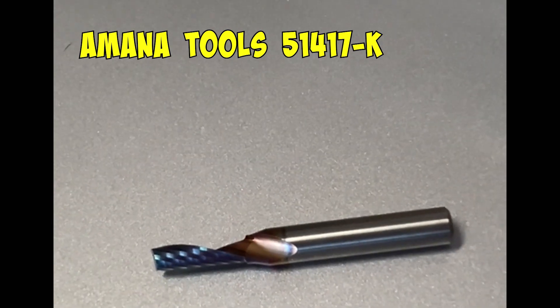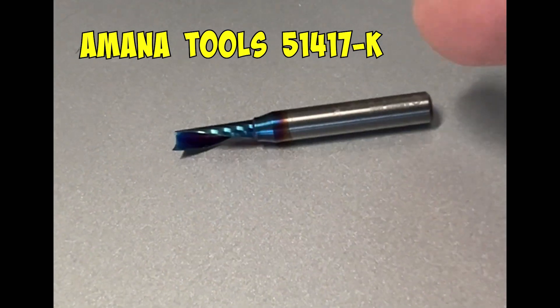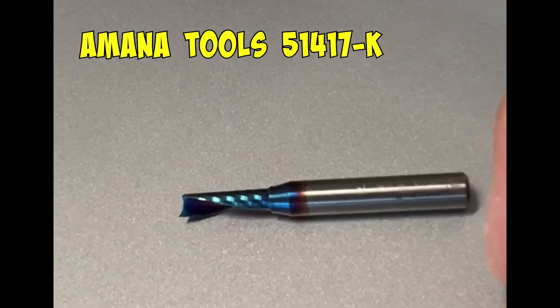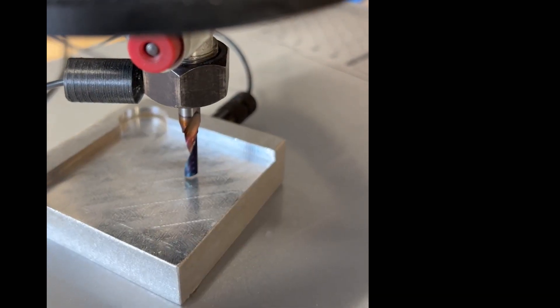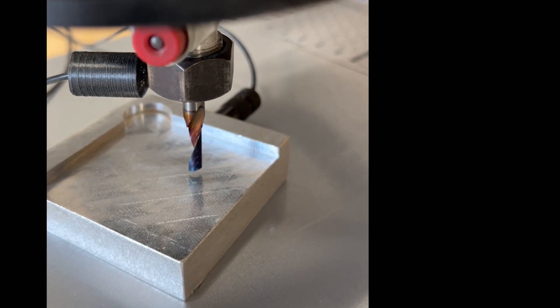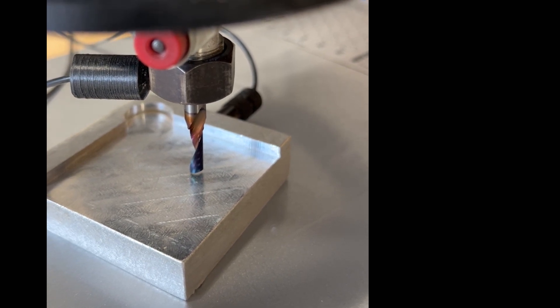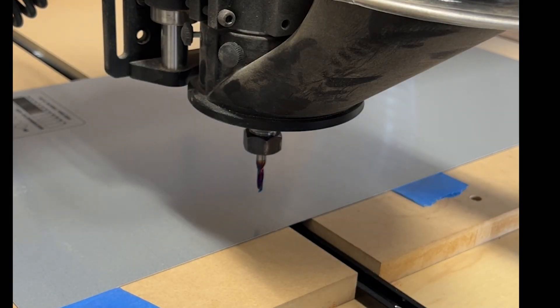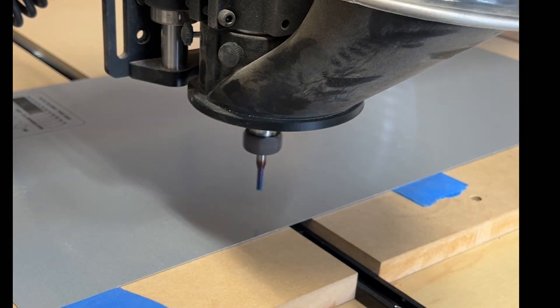Moving on to the cut, you want a low flute bit for reduced temperature basically, and I chose the Amana Tools 51417-K. My favorite part of CNC - set the Z and let her rip.